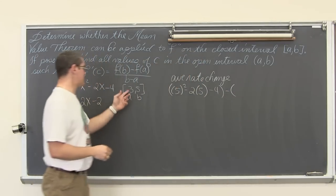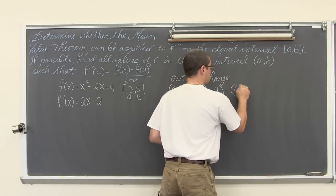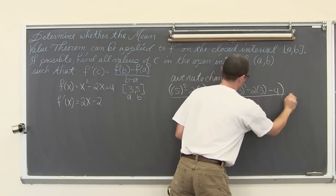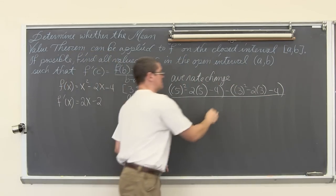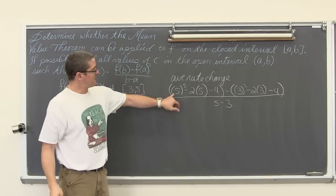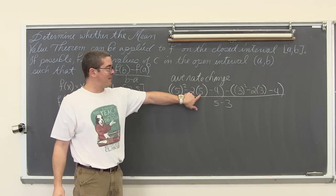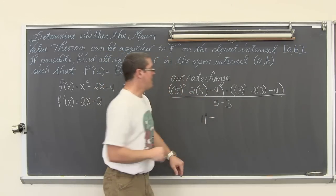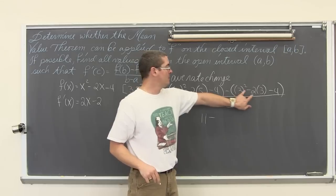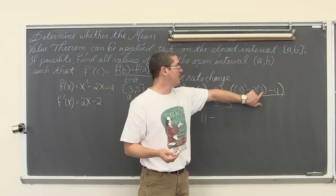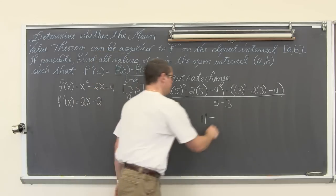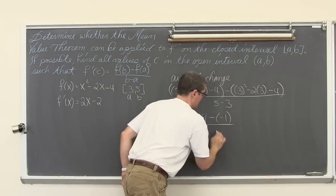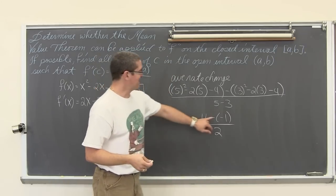That is the, I got a lot going on here, so I am going to use parenthesis to make sure you don't make any sign errors. Minus parenthesis, we are going to do the same thing with the 3. So 3² - 2(3) - 4 all over b - a, so this is going to be 5 - 3. So we have 5² is 25. 25 - 10 is 15. And 15 - 4 is 11. Minus, we have 3² which is 9. Here we have -6, so 9 - 6 is 3. And 3 - 4 is -1. All over 5 - 3 which is 2.